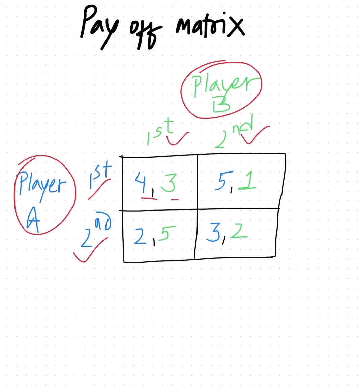The numbers 4, 3, 5, 1, 2, 5, and 3, 2 all represent pairs of payoffs. By payoff, we mean a return or outcome when different players adopt different strategies.